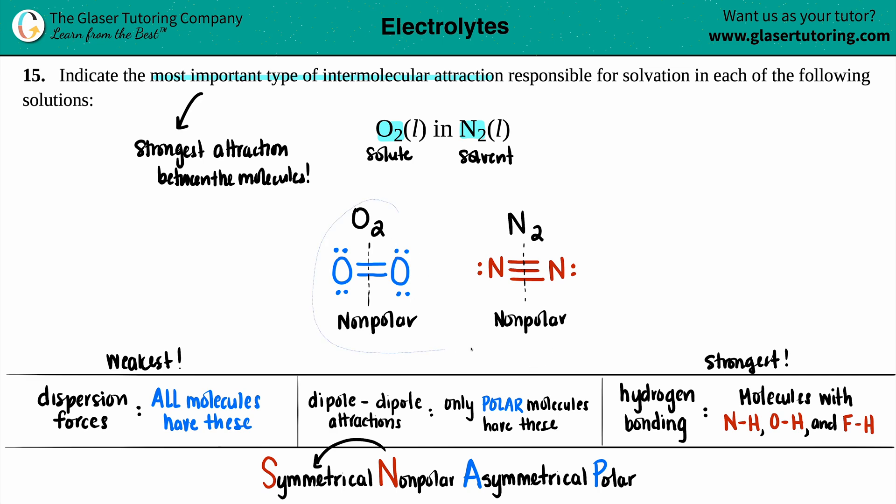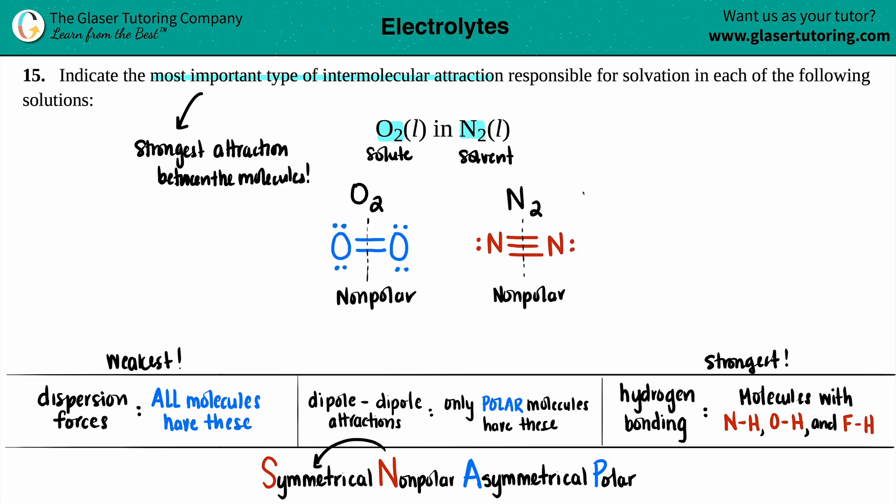Since we know that we only have non-polar molecules, we can find our intermolecular attractions or forces. Dispersion forces, also known as London forces or Van der Waals forces, just know that all molecules have these. So this is like the gimme force where it doesn't matter who you are, you will always have dispersion forces. So for O2, they got dispersion. And for N2, you got dispersion.